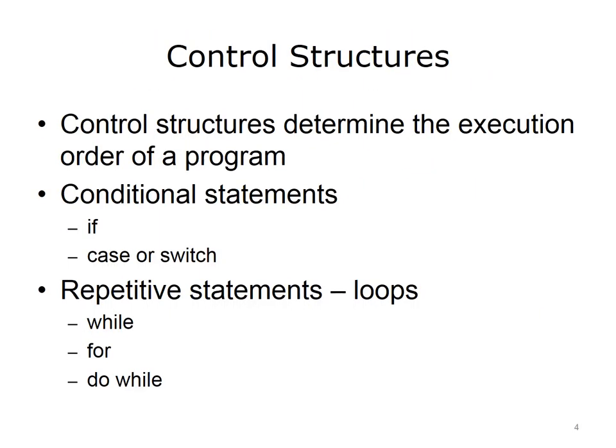In the programming example of the Body Mass Index or BMI calculator in the previous lecture, every statement was executed in the order it appeared. But this is not always the case, and frequently it is necessary to change the order of statement execution in a program. It might be necessary to have a statement execute conditionally, meaning it only executes if some condition is true. There are two types of conditional statements: if and case or switch statements. At other times, a statement may repeat a section of code — this is called looping. There are different types of loops, for example while, for, and do while.